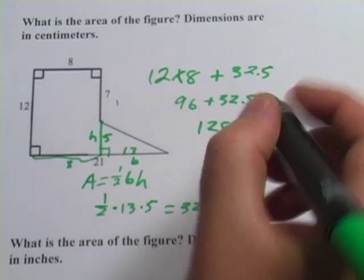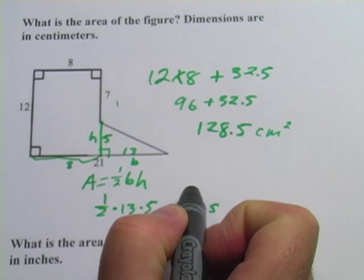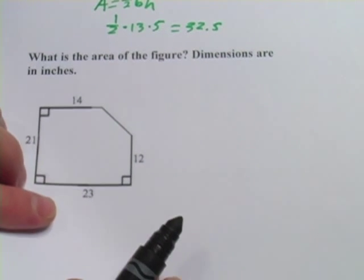Let's see, the dimensions were in centimeters, so this is square centimeters, because that's the area of that figure. Let's try another one.